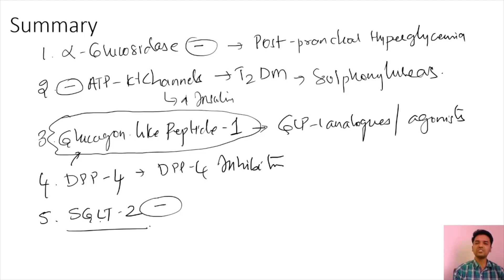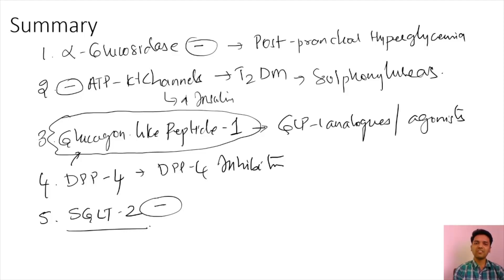Understanding how glucose travels physiologically in the body makes it very easy to classify these five different types of anti-diabetic drugs, which are used profoundly in the management of type 2 diabetes mellitus. If you liked and understood this video, kindly subscribe, like, and share — there's a lot of interesting and important content coming in the future.